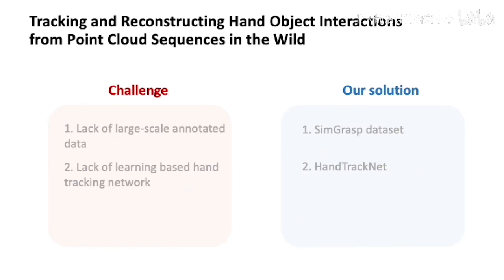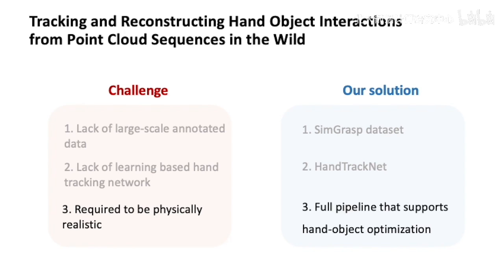We observe that hand-object pose and reconstruction need to be physically realistic — for example, free from penetration or object floating in the air. We thus propose a full pipeline that jointly tracks and reconstructs hand and object, which enables optimization-based hand-object reasoning.